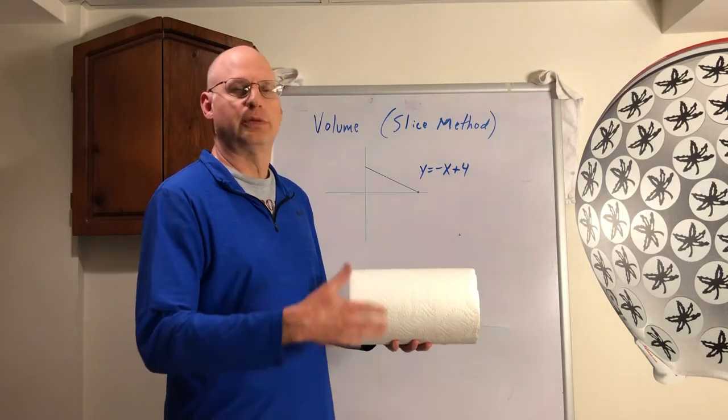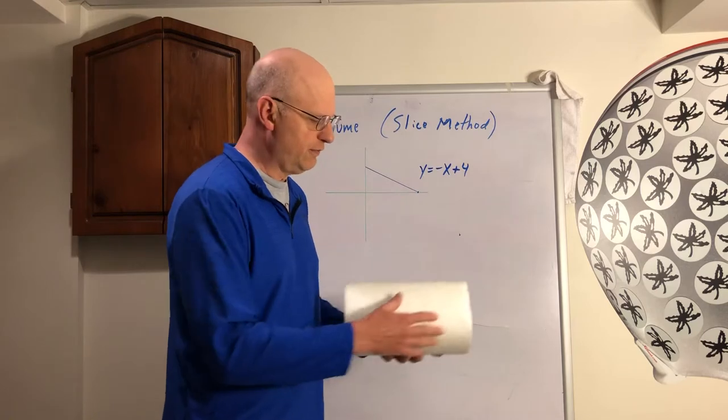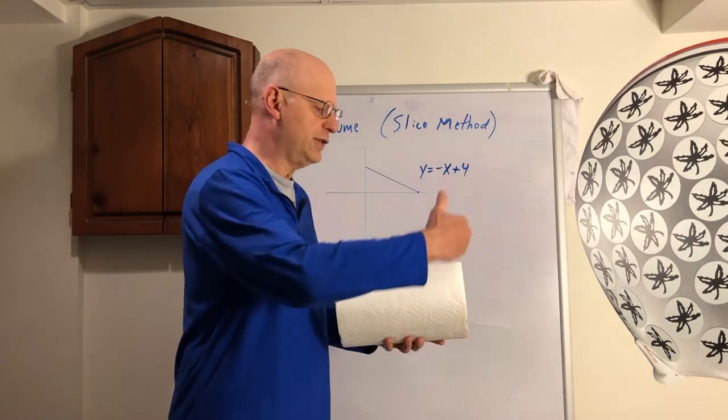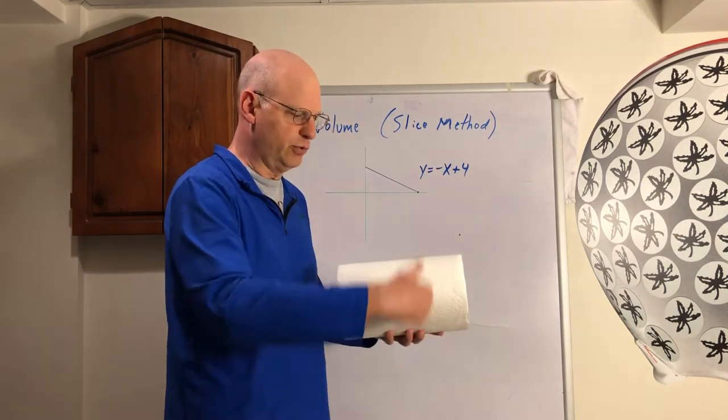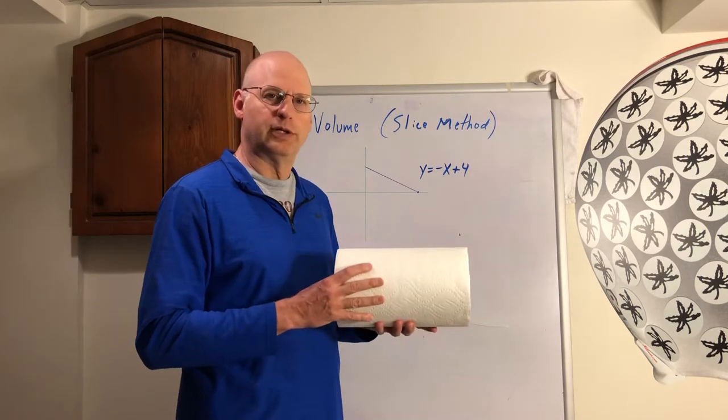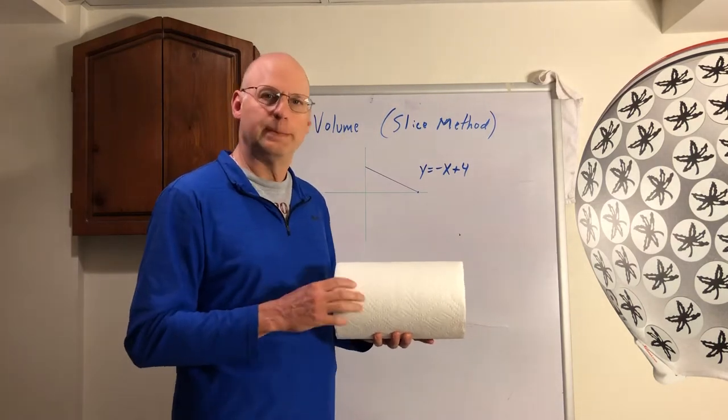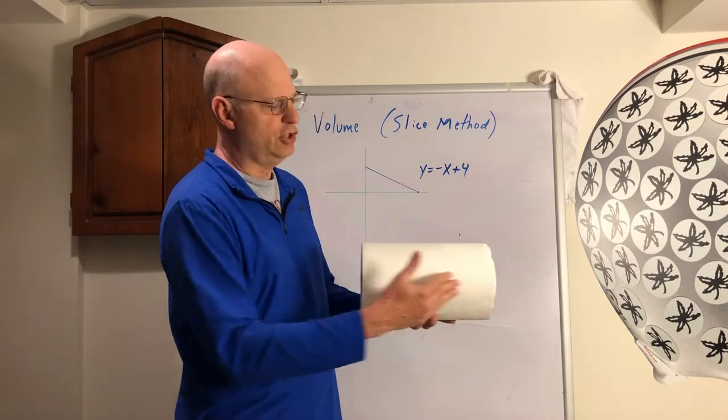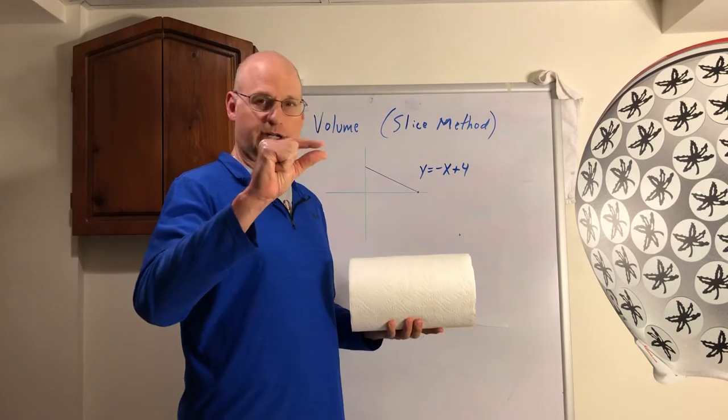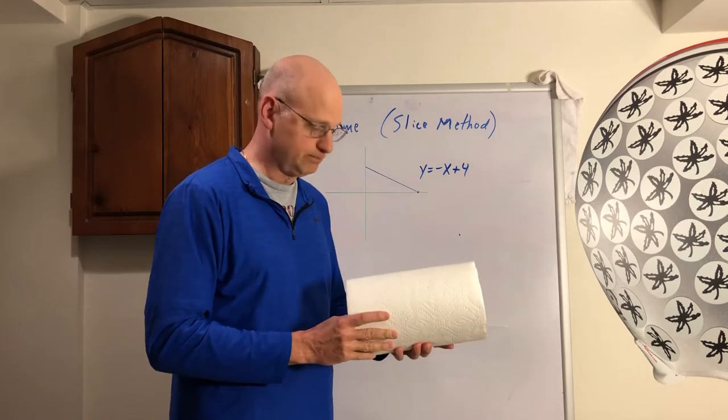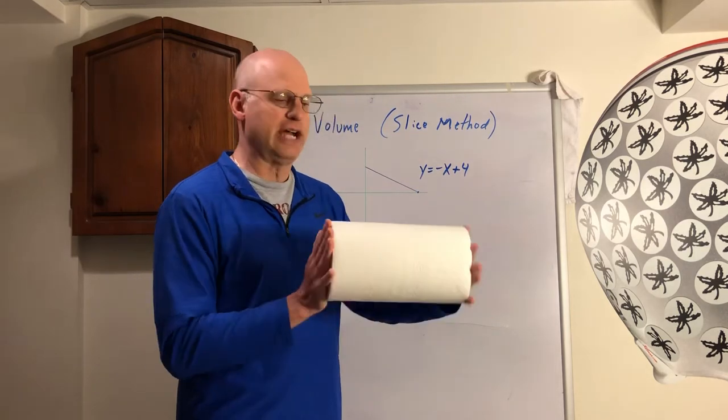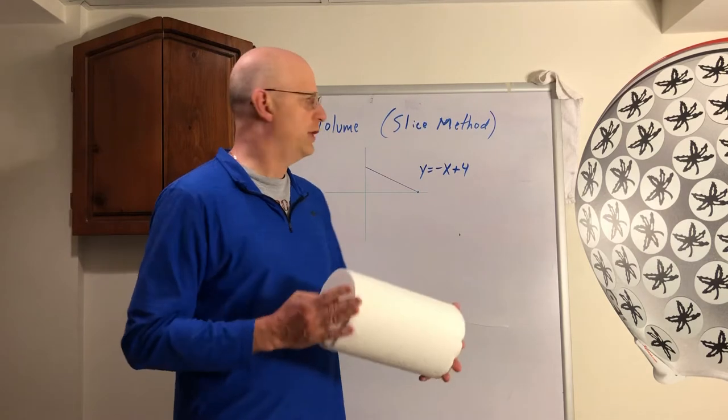So what the slice method, or some books call it the disk method, is like this. Think of this as like a big piece of bologna, lunch meat bologna, and just take and start slicing thin slices like this. You put it through the deli slice machine and then you get little slices of bologna. Well, think what would the pieces of bologna look like? They would look like a thin little circle. So what you've done is you've taken this huge cylinder and cut it into a bunch of little tiny cylinders that have real little thickness, because you're just looking at like a piece of bologna. Well, if you took those pieces of bologna and you added them all together, took all their volumes and added them up, you would get back to the thing you started from. That's the theory behind this slice method.